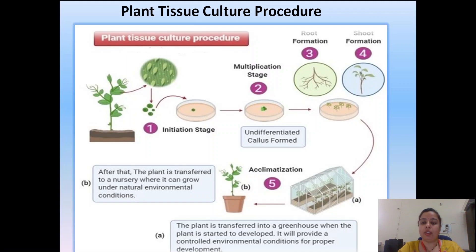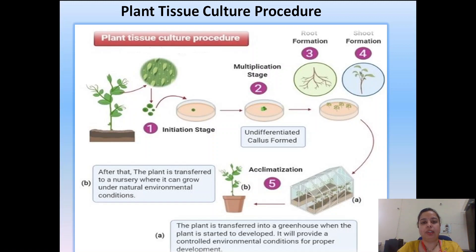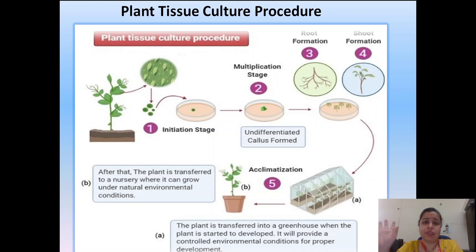After this, small seedlings are prepared and we transfer them to the greenhouse so that the plant does not suddenly experience climatic or soil changes, which could cause infection or degradation. A controlled environment is provided — this is acclimatization. In the last step, after acclimatization, when the saplings are successfully growing, we can transfer them to nurseries in the natural environment. This is basically what happens in plant tissue culture.